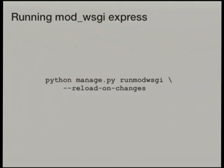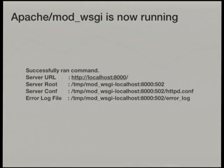Now the cool part: to actually run mod_wsgi with Django, we simply run the 'runmodwsgi' management command. This will automatically generate an Apache configuration for you, including mounting the Django application and setting up static files. In a development environment, we can even enable automatic code reloading. The output gives the URL to access the site and the location of the generated Apache configuration. It also gives you the Apache error log in case anything goes wrong. The Django debug toolbar will now work because we followed those explicit configuration steps.